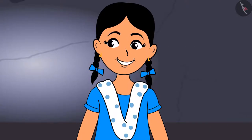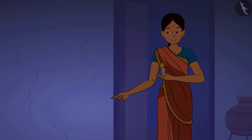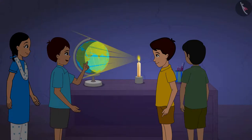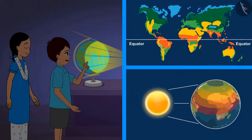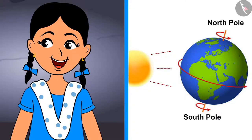Think that this torch is like the sun and the globe is the earth — the sun rays also fall like this on the earth. Children, here, take this candle. Why don't we use the candle as the sun, and Rinku, you spin this globe like the earth spins on its axis. Look — this is the equator, the rays of the sun fall directly over it, and slanting on the other areas. It is very hot where rays fall directly, and very cold at the north and south poles.